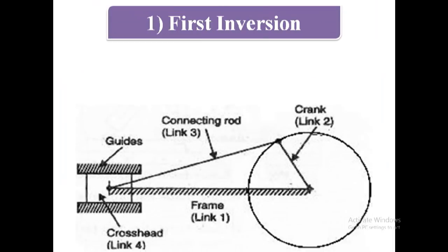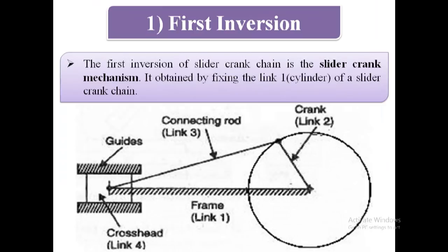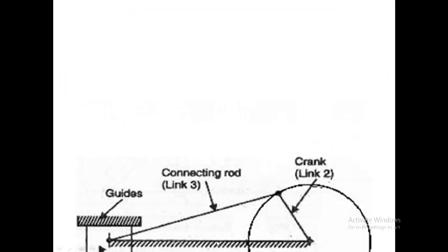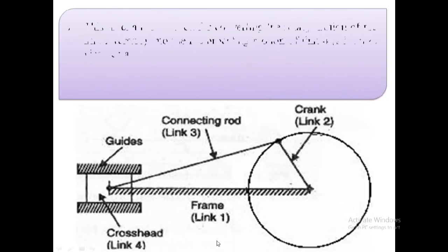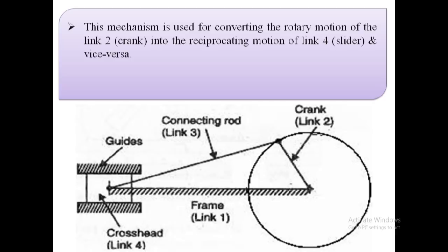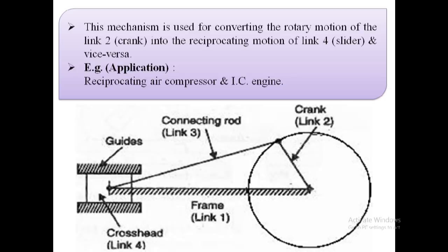First inversion: the first inversion of slider crank chain is the slider crank mechanism itself. It is obtained by fixing link 1, that is the cylinder. This mechanism is used for converting the rotary motion of link 2 (the crank) into the reciprocating motion of link 4 (the slider), and vice versa. Examples or applications are reciprocating air compressor and IC engine.